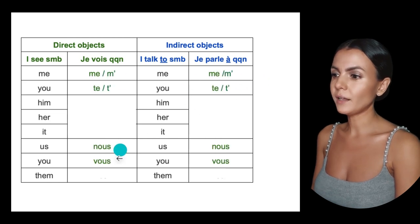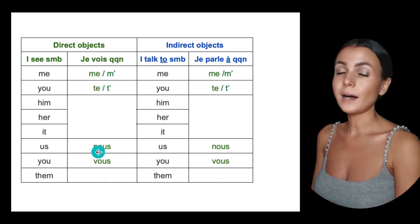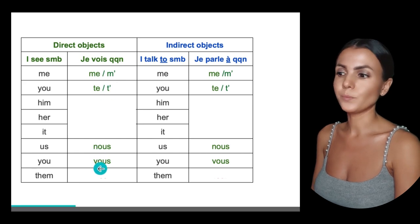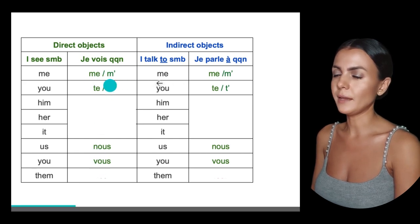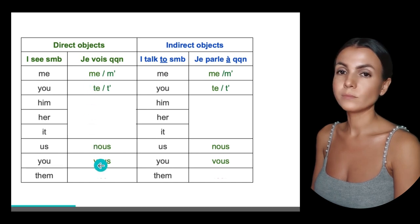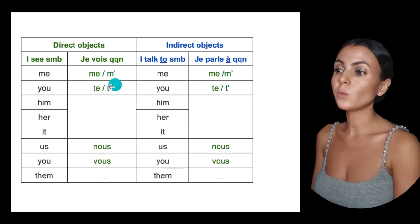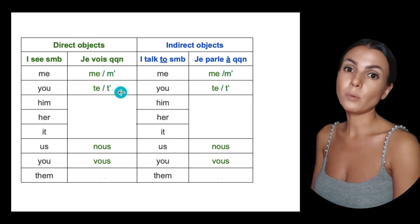The pronouns in green are the same for both direct and indirect. So for me, you, us, and you — they will be the same: me, te, nous, vous. Same here: me, te, nous, vous. We use m'apostrophe and t'apostrophe if the following word starts with a vowel — that's the regular rule in French.